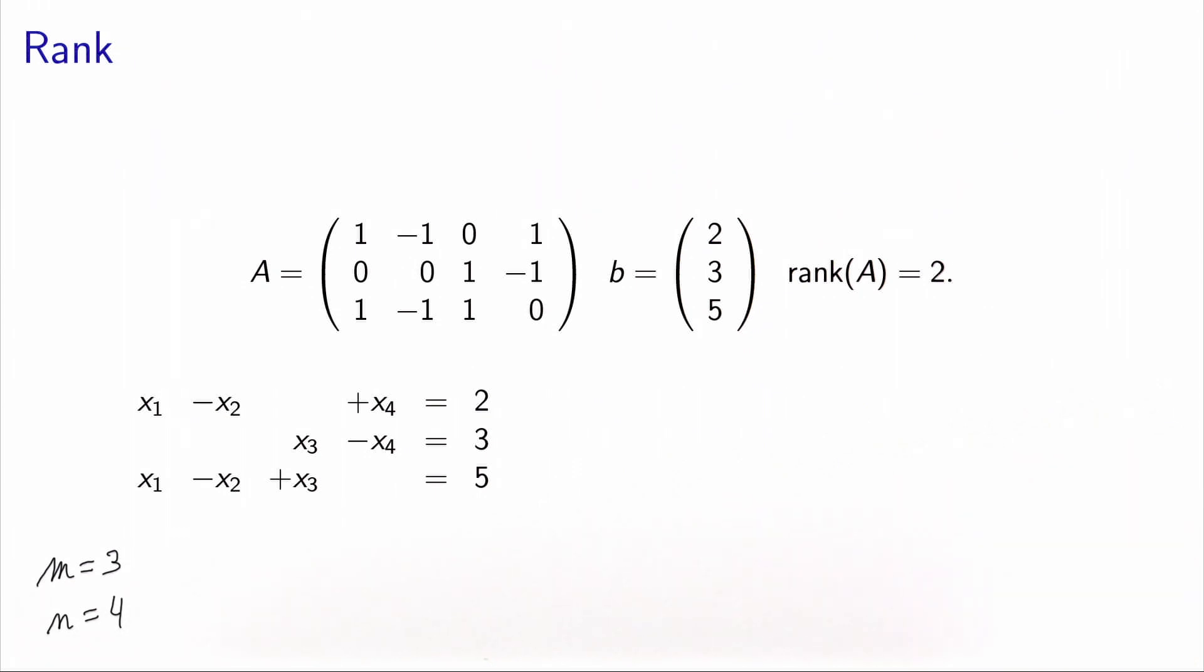Actually, if you calculate the rank of this matrix, you see that the rank is 2, although it has 3 rows. In the context of linear algebra, we are saying that there is a rank deficiency. The rank is strictly lower than the number of rows. What does it mean? Well, in the context of optimization, it means that one of the constraints is actually redundant.